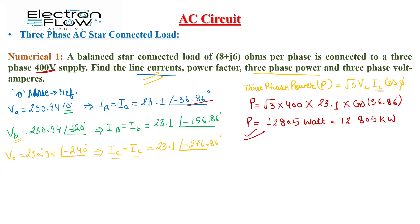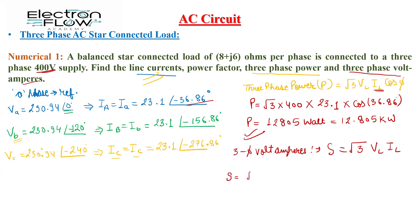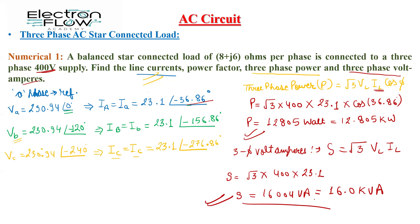The question also asks us to find the three-phase volt-amperes, meaning apparent power S. The formula is S equals root 3 times VL times IL. Substituting: S equals root 3 times 400 times 23.1, giving an apparent power of 16,004 VA, or 16.0 kVA. This is how we have calculated all the parameters asked in the question. Thank you very much — please like and subscribe our channel.